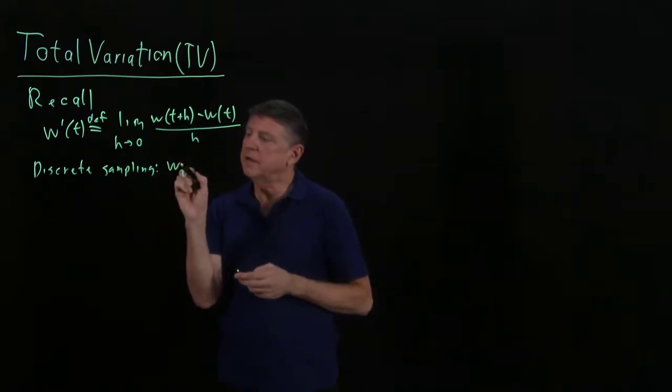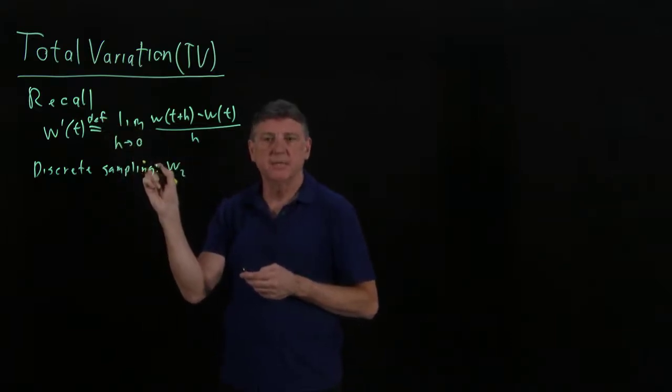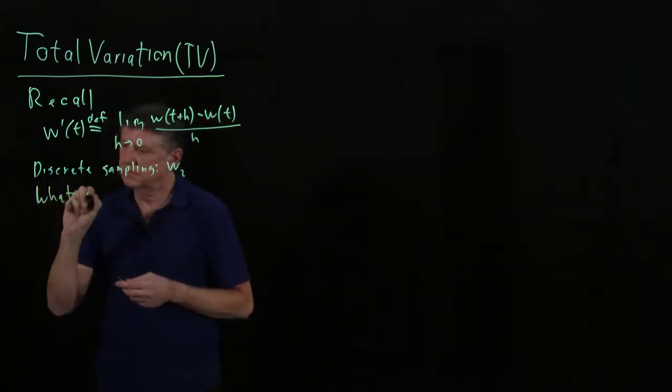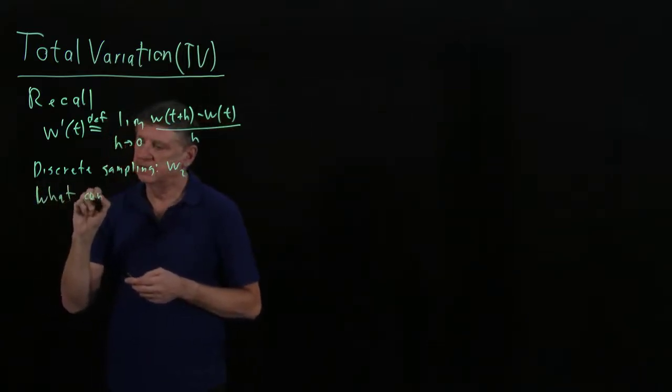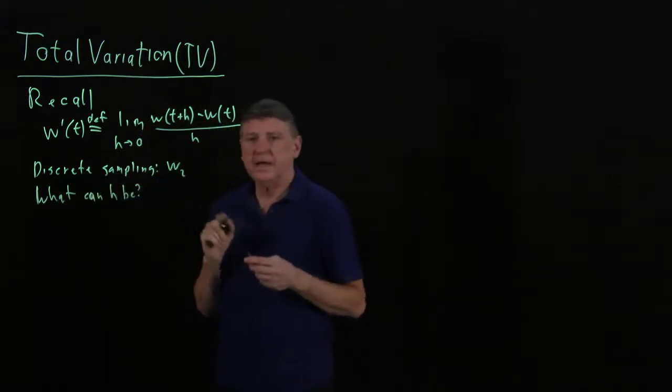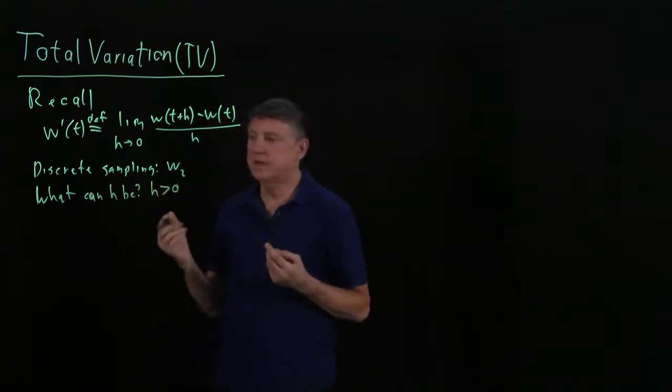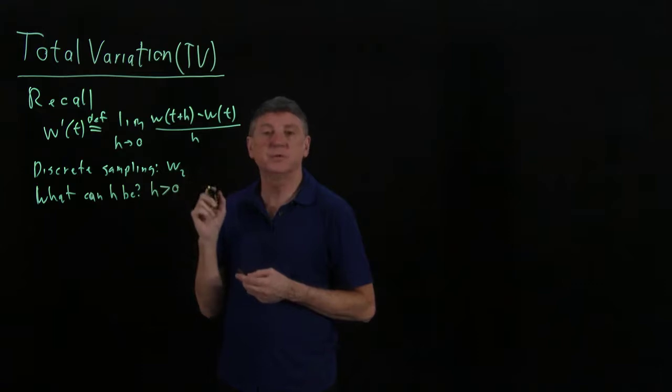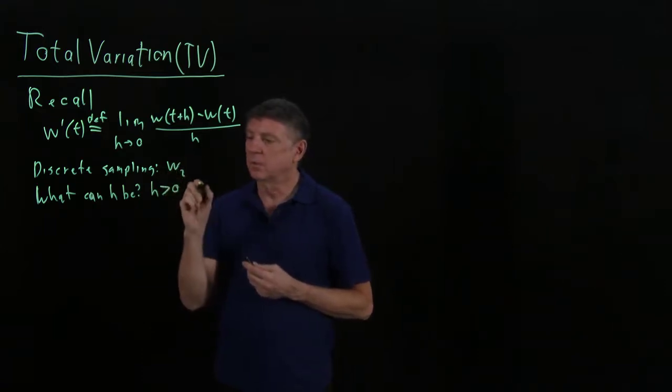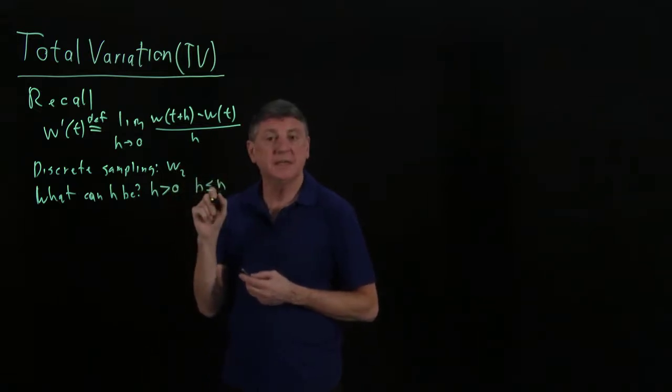So now, we can't exactly do this, right? So what can h be? Well, h has to be strictly greater than zero, because we can't have w zero if we have an index of one. We have to have h less than or equal to n. That is, h has to be an integer.